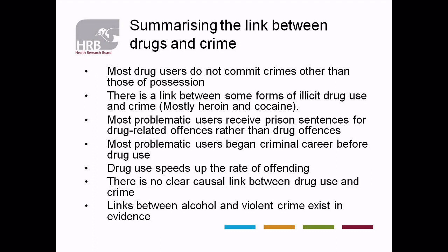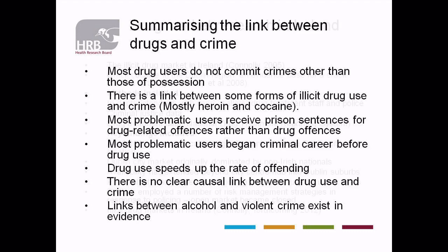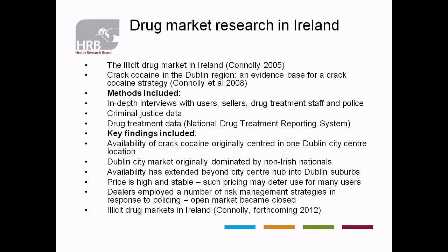Most problematic users began their criminal career before their drug use — so it wasn't drugs that led them to commit crime, they were already committing crimes. Drugs didn't cause crime; their offending behaviour had already begun. Drug use and particularly addiction would have increased the rate of their offending behaviour, but it didn't cause it in the first place. So if you're trying to address the cause, you have to address the cause of crime in the first place. Although there is so much concern about illicit drug use, and although we read about gangland killings every day, we know very little — almost nothing — about illicit drug markets in Ireland.